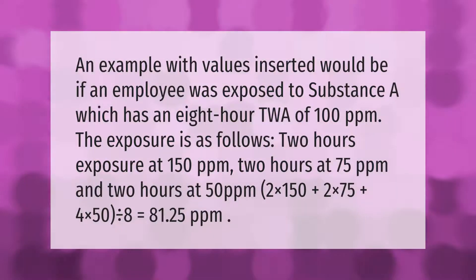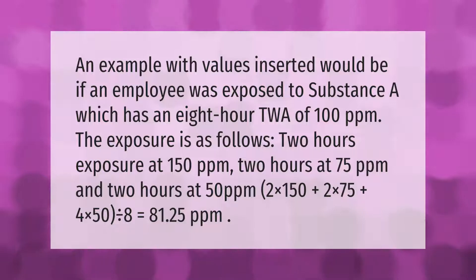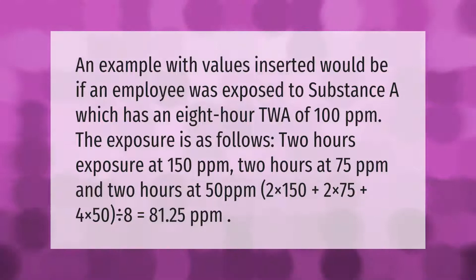An example with values inserted would be: if an employee was exposed to substance A, which has an 8-hour TWA of 100 ppm, the exposure is as follows — two hours at 150 ppm, two hours at 75 ppm, and two hours at 50 ppm. Two times 150, plus two times 75, plus four times 50, divided by eight, equals 81.25 ppm.